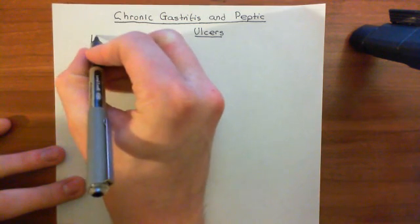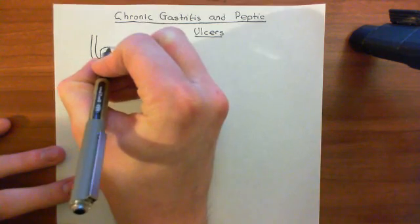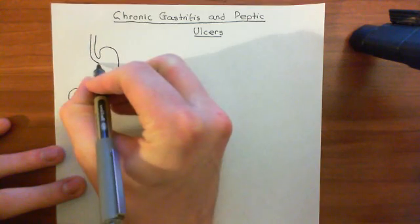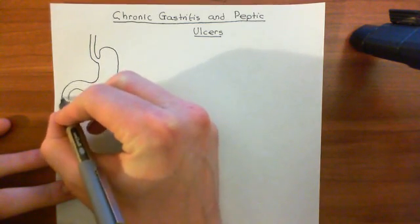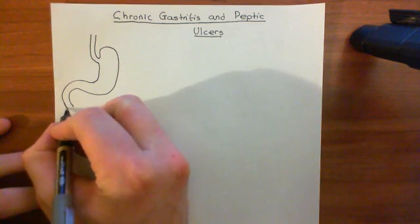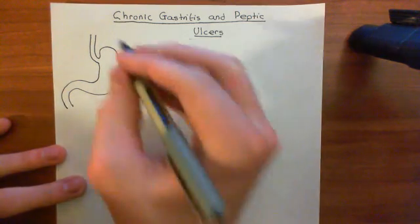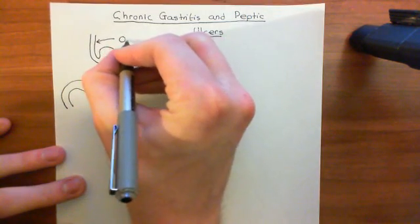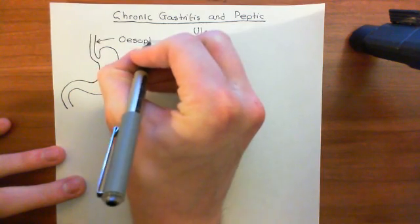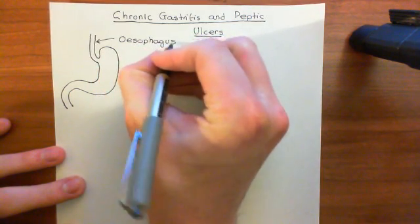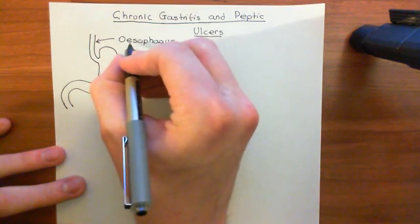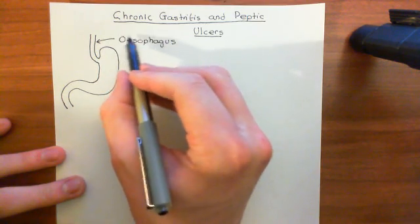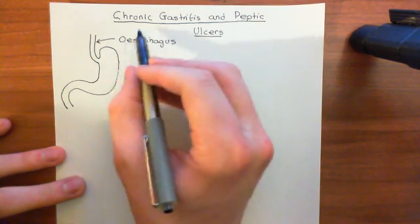Let's start by drawing the esophagus, which then leads into the stomach, which curves around, and then you have the duodenum. This tube that leads into the stomach is the esophagus — I'm using the British English spelling with the 'oe' at the front; the American English spelling omits the O, so just drop it if you prefer.